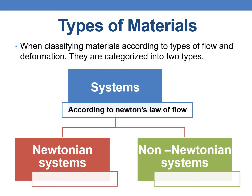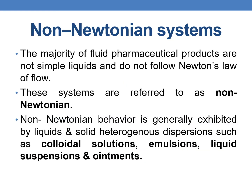Before that, let us briefly discuss about the types of material. Whenever we classify the materials according to the type of flow and deformation, they are categorized into two types: Newtonian systems and non-Newtonian systems. Majority of the fluid pharmaceutical products are not simple liquids and they do not follow Newton's law of flow, and these systems are referred to as non-Newtonian systems.